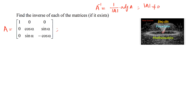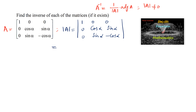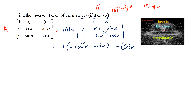So let us find the determinant of the matrix. det(A) is the determinant of [[1,0,0],[0,cosα,sinα],[0,sinα,-cosα]]. Expanding along the first row, only the entry 1 contributes. We get 1 times (cosα × (-cosα) - sinα × sinα) = -(cos²α + sin²α) = -1, which is not equal to 0. Hence A inverse exists.